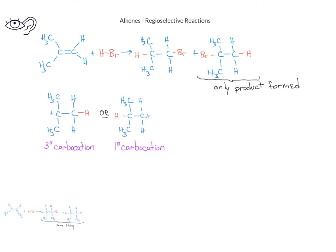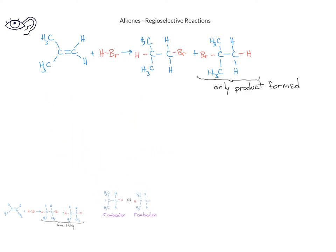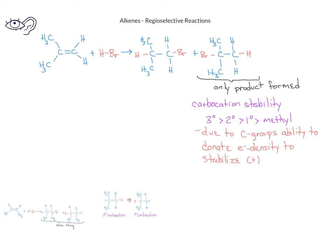In terms of stability, we learned that a tertiary carbocation is more stable than a secondary carbocation, which is in turn more stable than a primary carbocation, and that in turn is more stable than a methyl carbocation. The reason for this stability is due to the carbon groups attached to the carbocation being able to donate electron density to stabilize the positive charge.